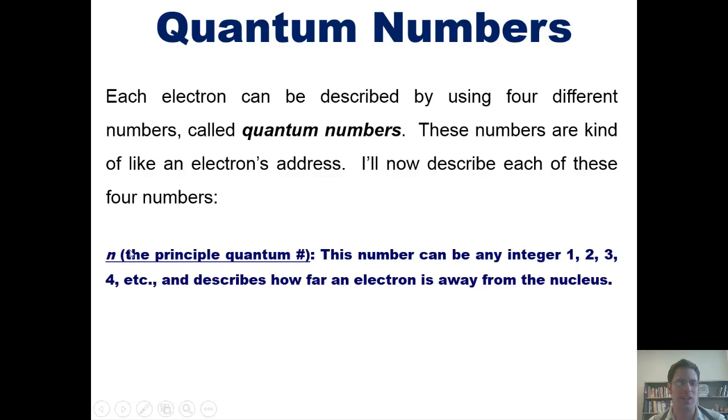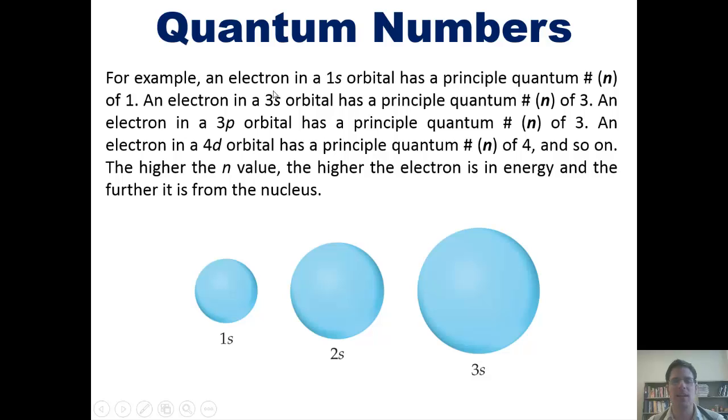The first one is called the n, or principal quantum number. This number can be any integer 1, 2, 3, 4, etc., and describes how far an electron is away from an atom's nucleus. For example, an electron in a 1s orbital has a principal quantum number, or n number, of 1.